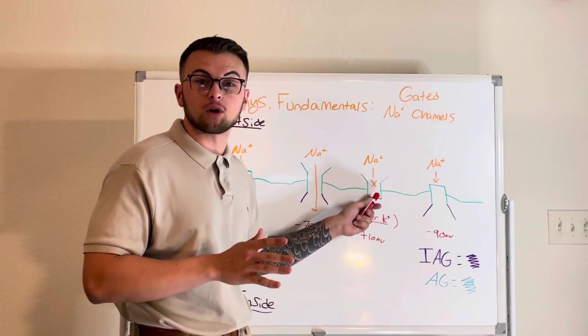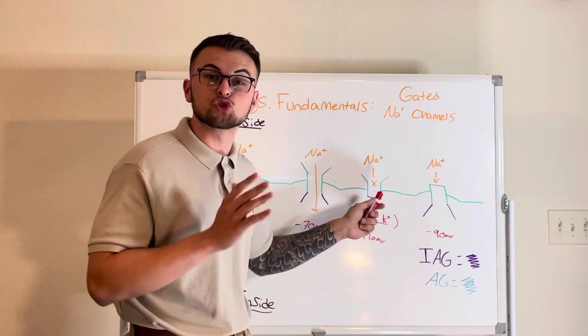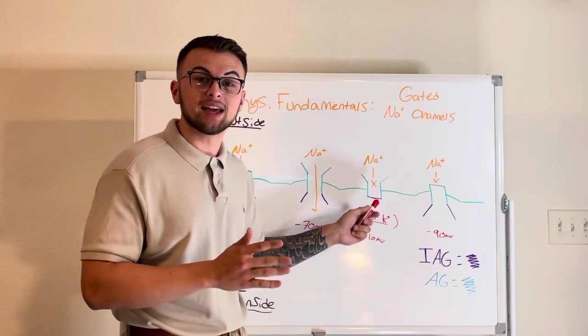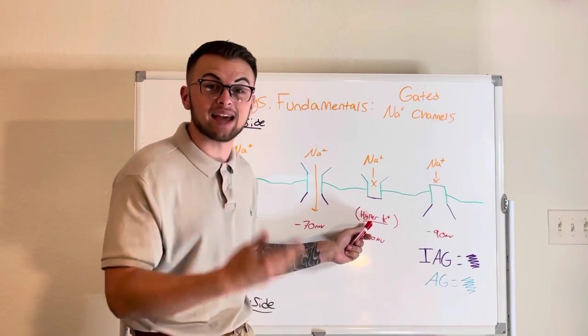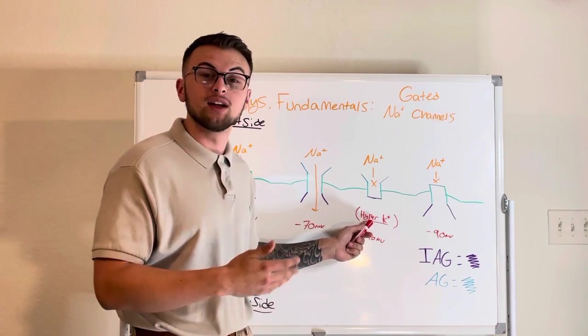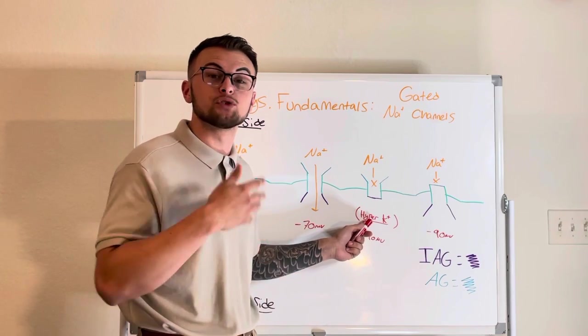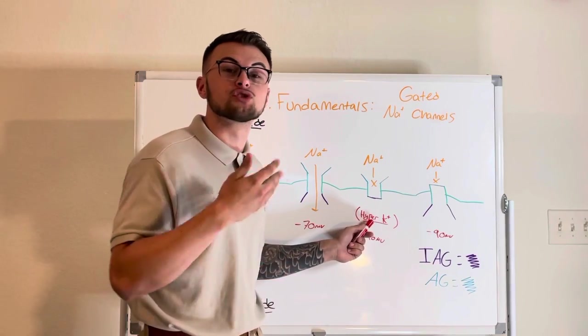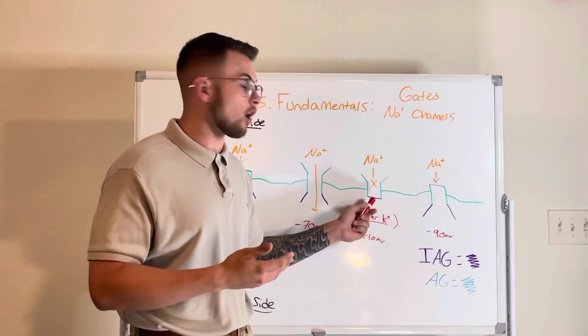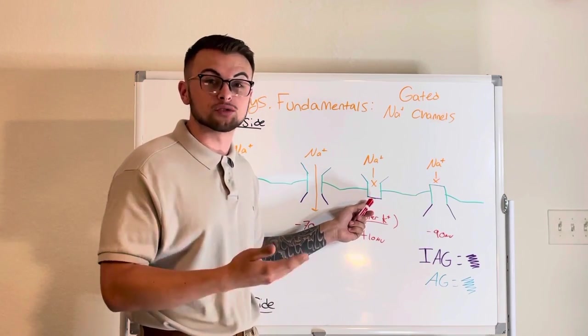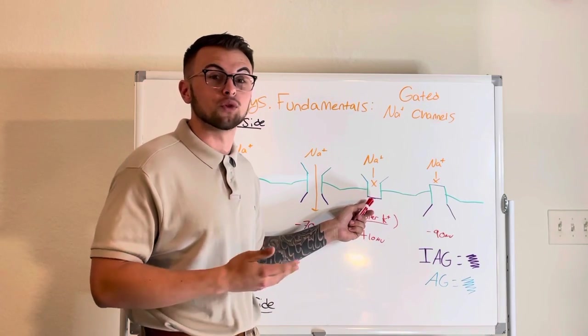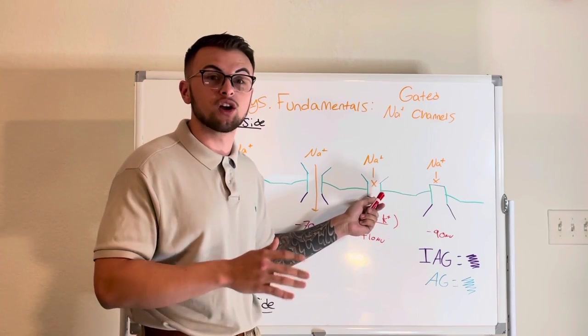No sodium will be able to come in. This is troubling because if our patient has excessive amounts of positive potassium in their blood, their cells will become too positive for too long. Our IAG brother will think it is time to work and keep his gate closed. Our cells will not receive their sodium.